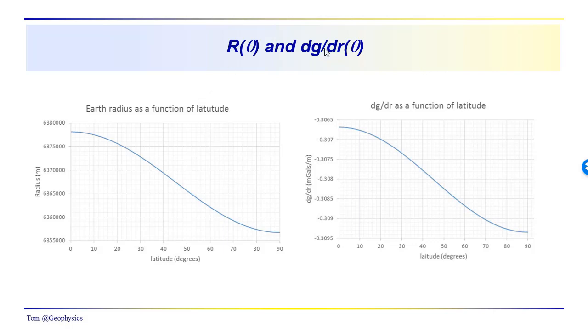So R of theta and dg/dr of theta. We have down here the radius varies from about a little over 6,355,000 to about 6,377,000 or so in terms of radius.